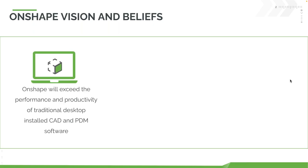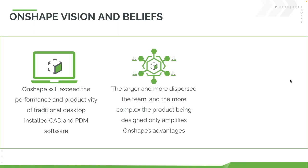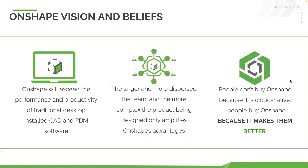Onshape's vision and beliefs — this is actually pulled from an event we just recently did, Onshape Live. If you're interested in watching that, there are recordings available. Our goal is to exceed the performance and productivity of traditional desktop installed CAD or on-premise CAD and PDM software. The way that our users are able to leverage our CAD architecture makes it so that the larger the team, the more dispersed the team, and the more complex the product being designed only goes to amplify the very clear advantages of a system like our own. SimScale is another cloud-native product. People don't buy Onshape because it's cloud-native — people buy Onshape because it makes them better, faster, more efficient, and more capable of collaborating.